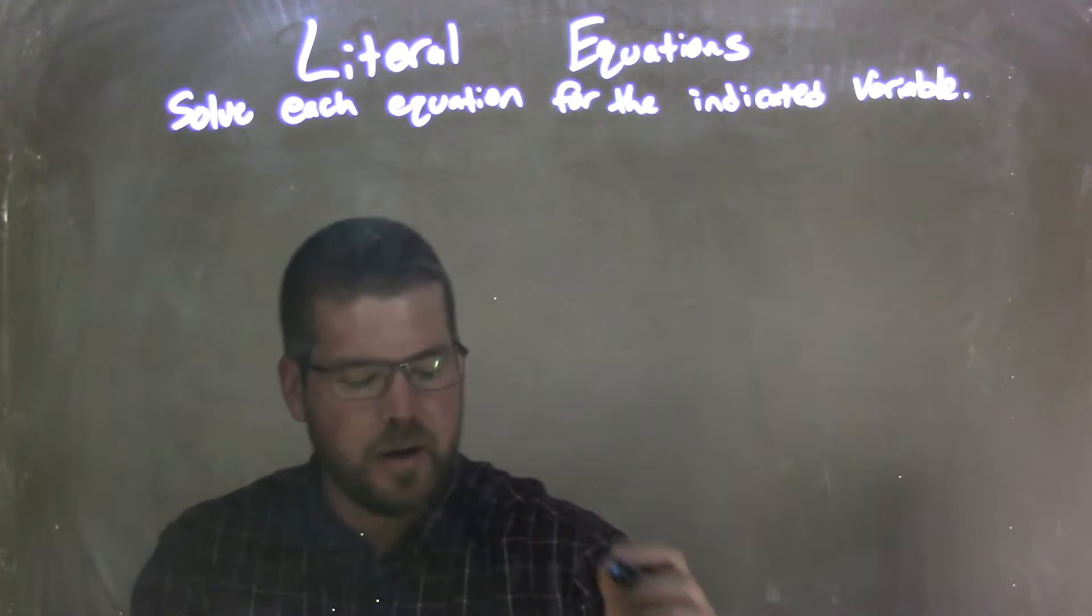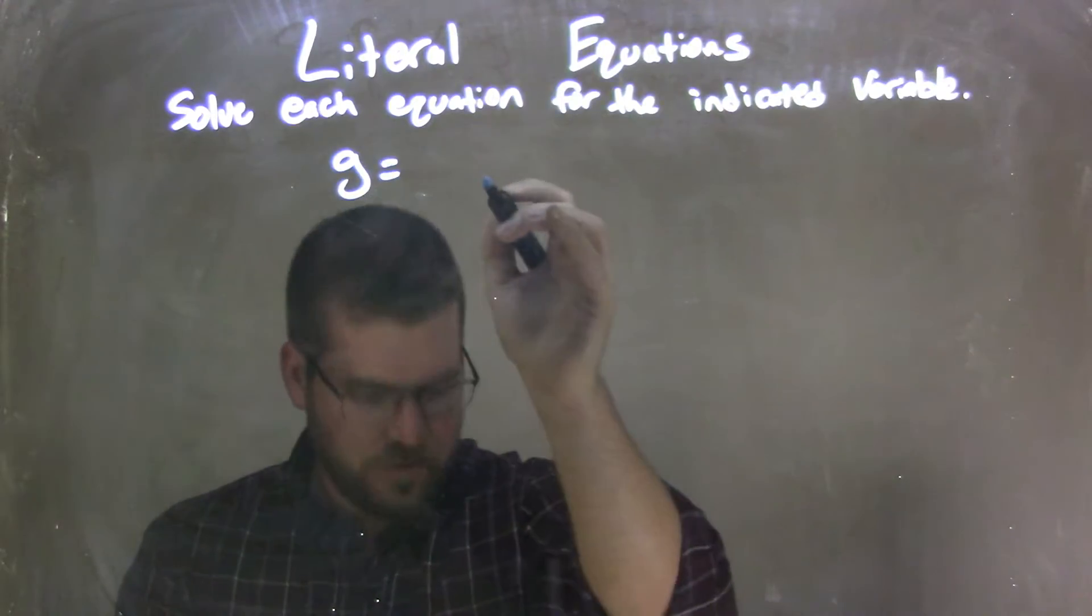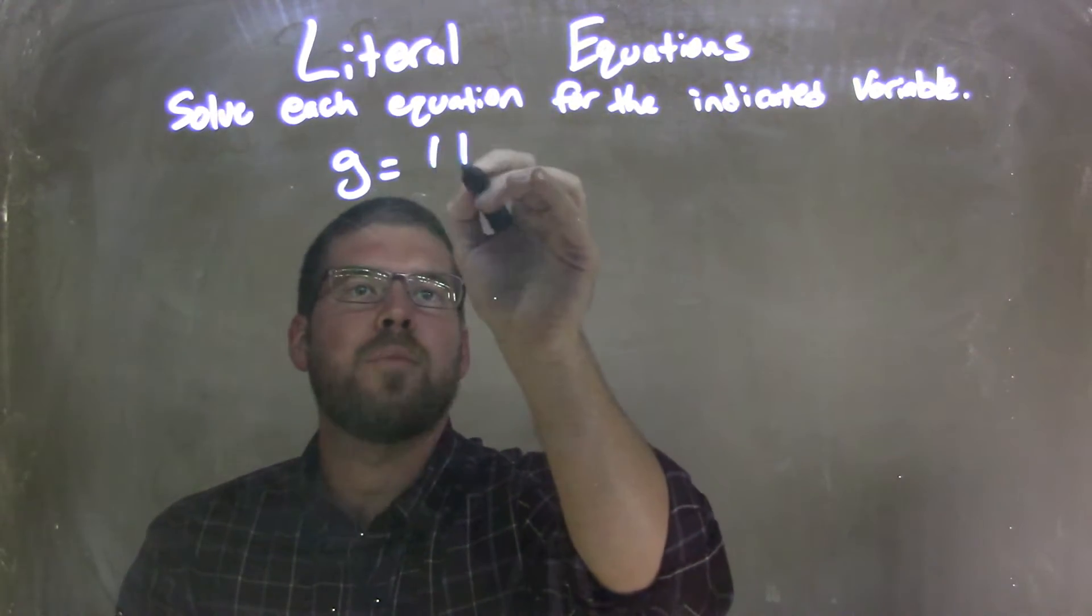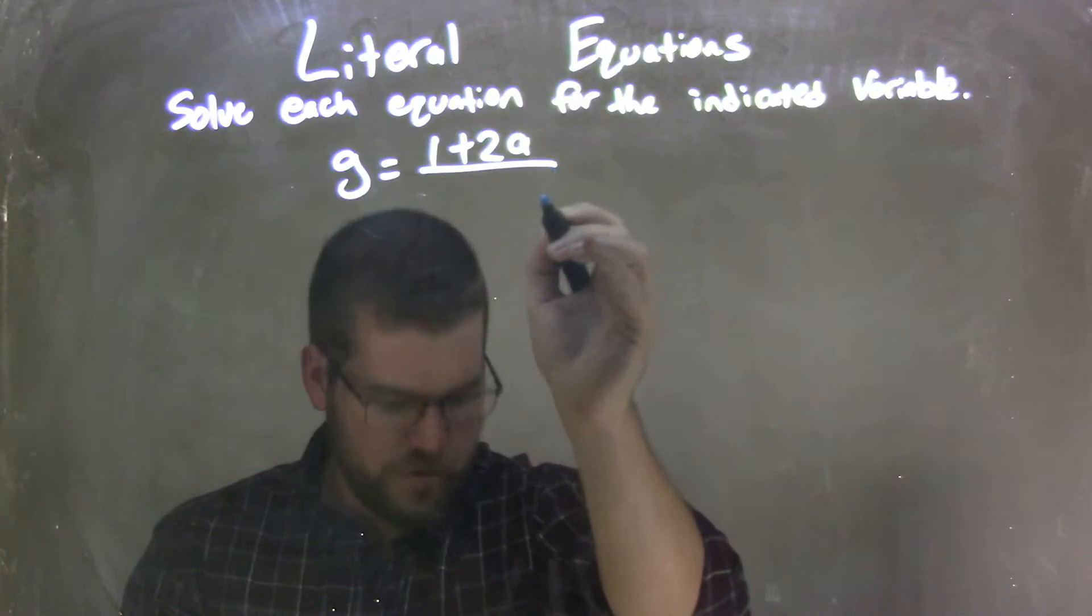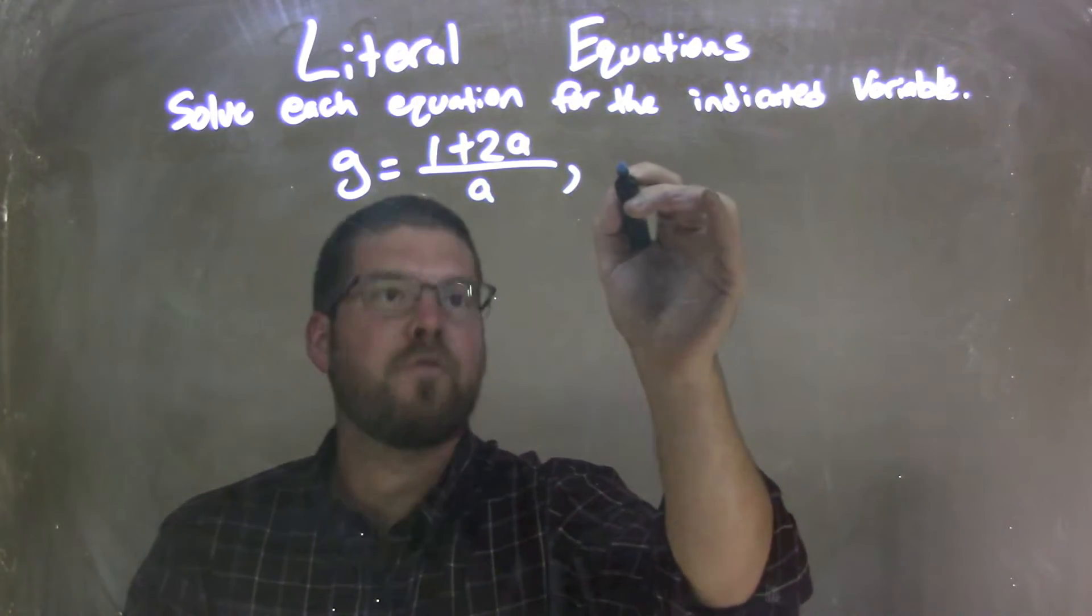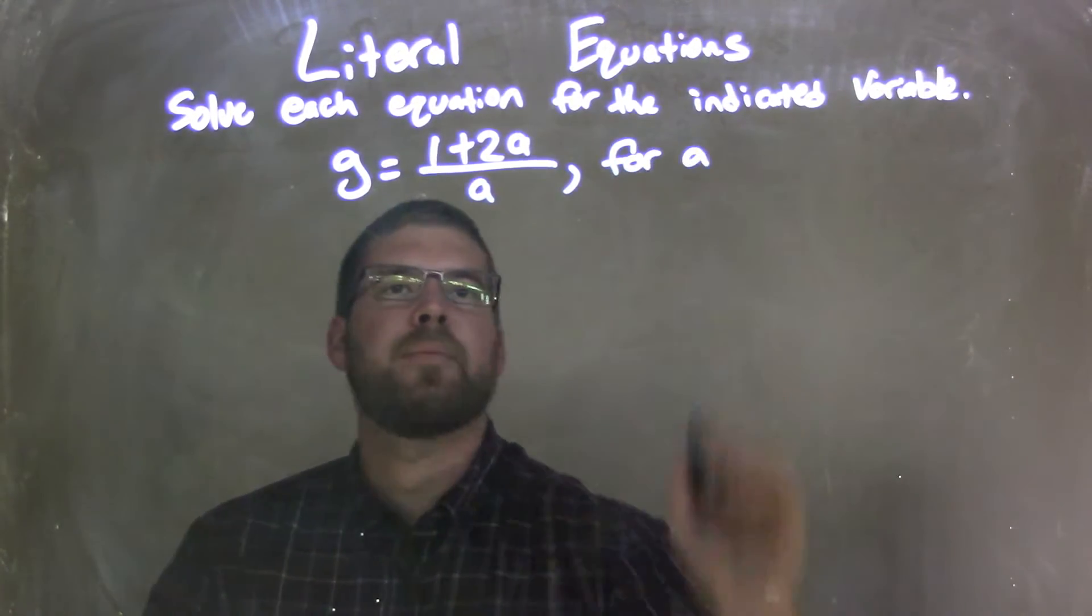So if I was given this equation, g equals 1 plus 2a over a, and we're solving that for a.